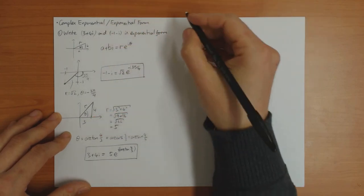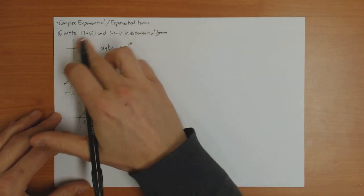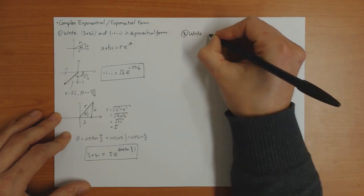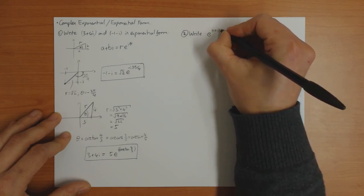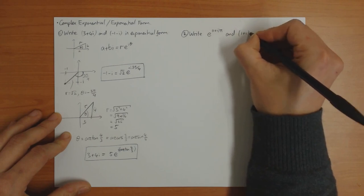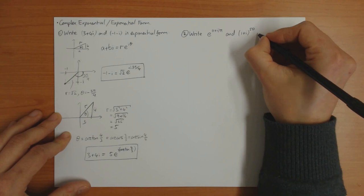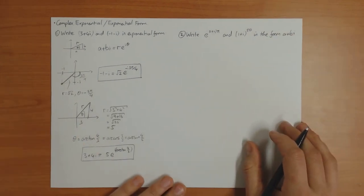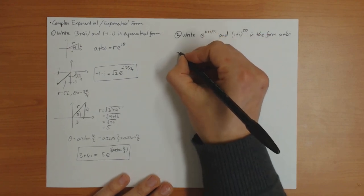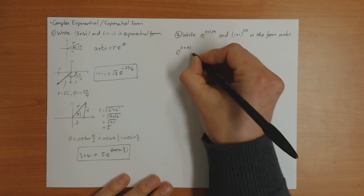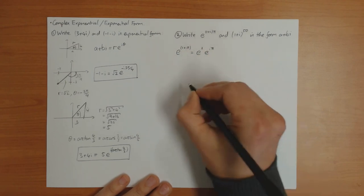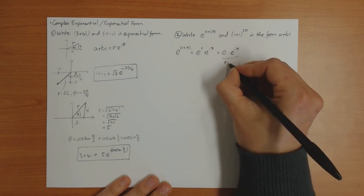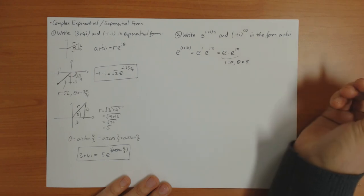The other example you can ask is to go the other way: given a number in exponential form, write it in the form a plus bi. So write e to the 1 plus i pi in the form a plus bi. So e to the 1 plus i pi is e to the 1 times e to the i pi, which is e times e to the i pi. This is complex exponential form where r is equal to e and theta is equal to pi.